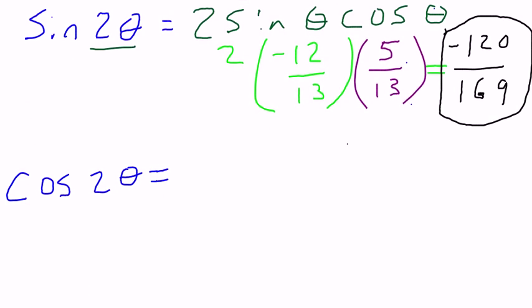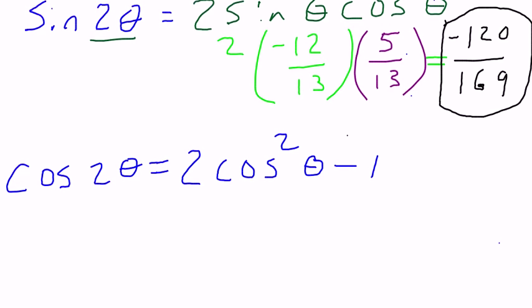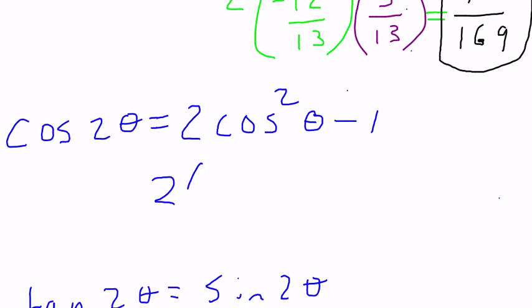Cosine of 2 theta. We have three different formulas we could choose. It does not matter which one you choose. I'm going to go ahead and just pick 2 cosine squared theta minus 1. Well, we already know cosine. So 2 cosine is given to us, 5 thirteenths squared minus 1.